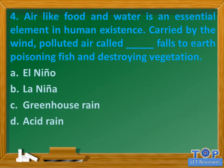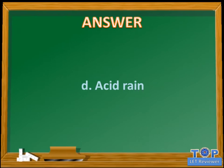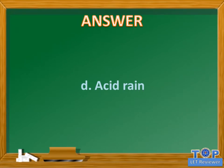Question number 4. Air, like food and water, is an essential element in human existence. Carried by the wind, polluted air called blank falls to earth poisoning fish and destroying vegetation. A. El Nino. B. La Nina. C. Greenhouse rain. D. Acid rain. Answer: D. Acid rain.